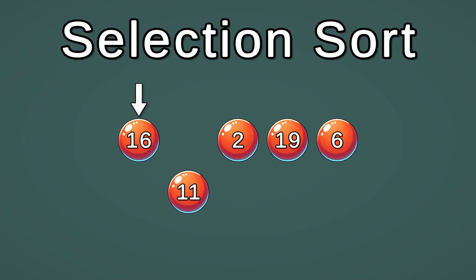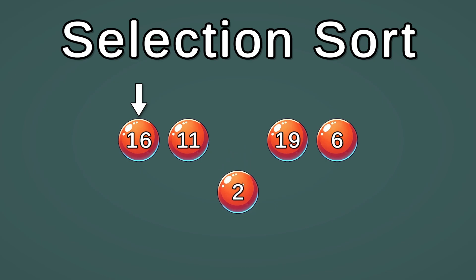We compare it with 2. 2 is smaller, that means we need to select 2. 19 is bigger than 2 and 6 is bigger than 2. So the smallest number of the array is 2.